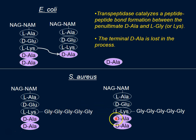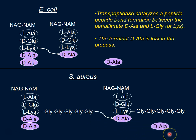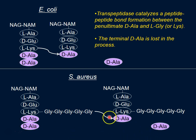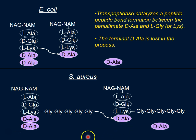Again, the same thing happens — the covalent bond forms and the terminal D-alanine leaves. And again, you have to have both D-alanines in place in the first place in order for this to occur.